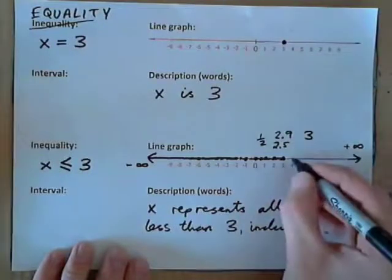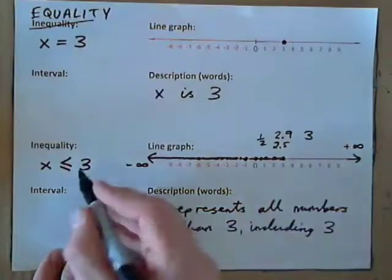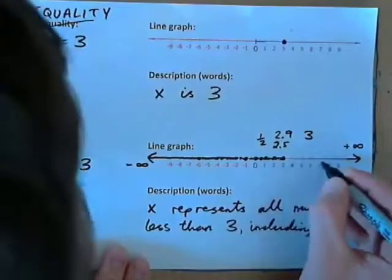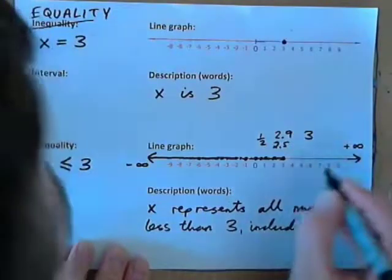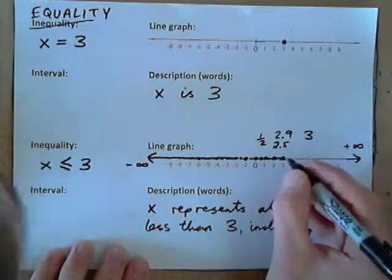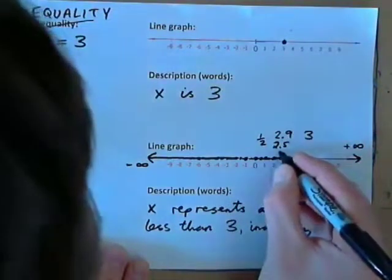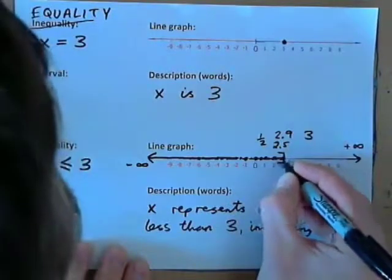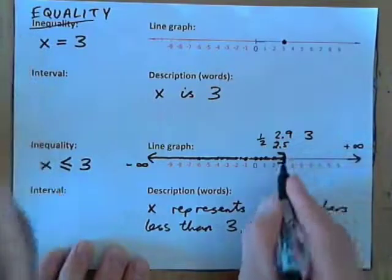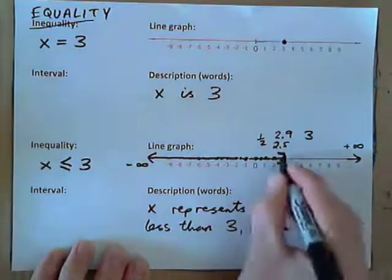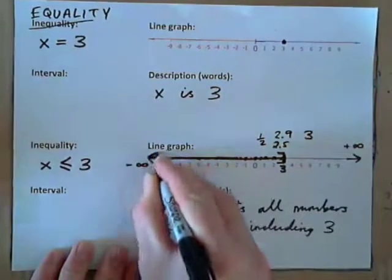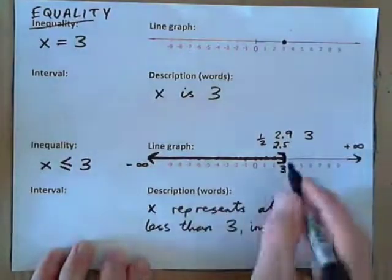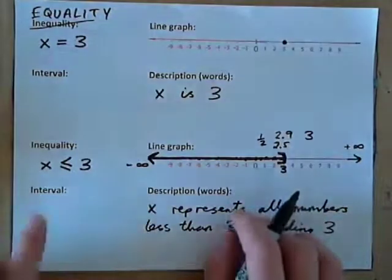Does x represent 4? Well, 4 is not less than 3, so 4 is not included in the set. Does 5 work? Or 6 or 7? These are all greater than 3. So, what we can do is put a square bracket over the 3 — like that. This is saying that x is 3 or less. Fill in the number line and fill in the arrow. So, this is the line graph of all numbers less than or equal to 3.